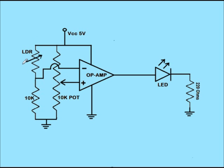When the LDR is in light, let us say the voltage at the inverting terminal is 4.5 volts and we have selected 4 volts at the non-inverting terminal using the potentiometer. In this condition, the non-inverting terminal is at a lower potential than the inverting terminal, so the output will be 0 and the LED will remain off.